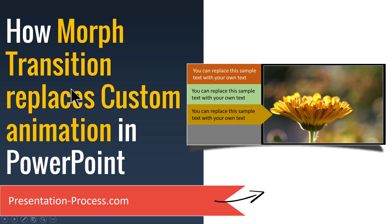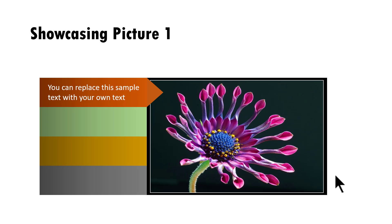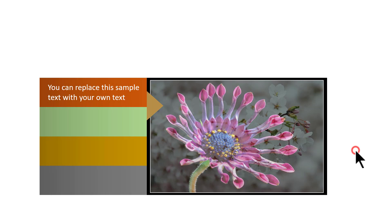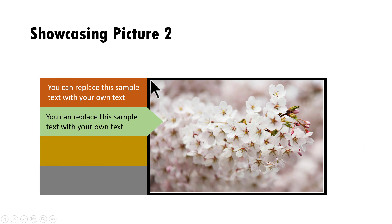In this video, I'm going to show you how morph transition in Office 365 replaces custom animation. I'm going to make the point by showing you how to create a beautiful picture showcase graphic in PowerPoint. The effect you will learn to create today looks like this. As you can see here, we showcase picture 1 here and the corresponding explanation is shown here. Then on a click, you can see that the arrow moves from this point to this point and then this picture changes.